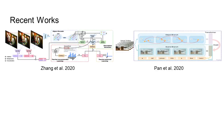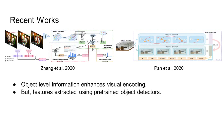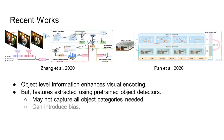Though adding object features improves the performance, it comes with the following drawbacks: first, pre-trained detectors may not capture all the object categories exhaustively; second, object detectors may introduce bias towards the object categories they have been trained upon.